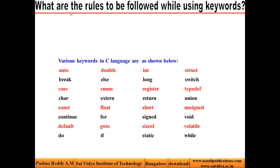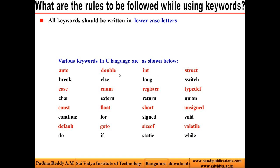Now let us see the rules to be followed while using keywords. First rule: all keywords should be written only in lowercase letters. All these keywords are written in lowercase letters only. If we change any of these characters to uppercase letters, they become identifiers. For example, if I change any of these letters to capital letters, it will not be a keyword — instead, it becomes an identifier.